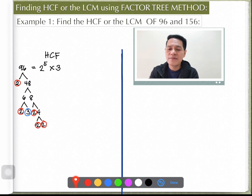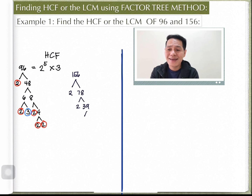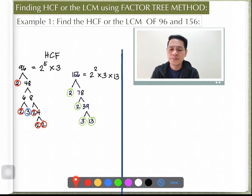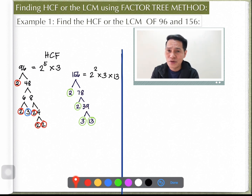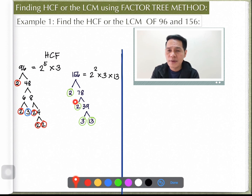Now we find the prime factors of 156 using the factor tree method. 156 gives 2 and 78; 78 gives 2 and 39; 39 gives 3 and 13. Since 3 and 13 are already prime, we circle them. So the prime factors of 156 are 2 squared times 3 times 13.